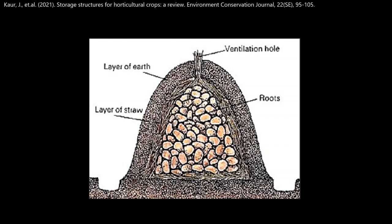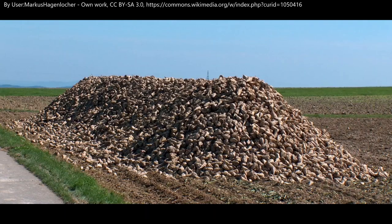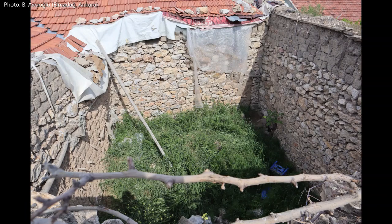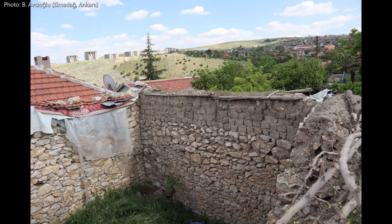For short-term storage, storage in the field on the ground is also possible. Not only human food but also animal fodder is stored using similar structures. Here you see an old abandoned stone barn — the roof is collapsed — and this is for fodder storage adjacent to a house.